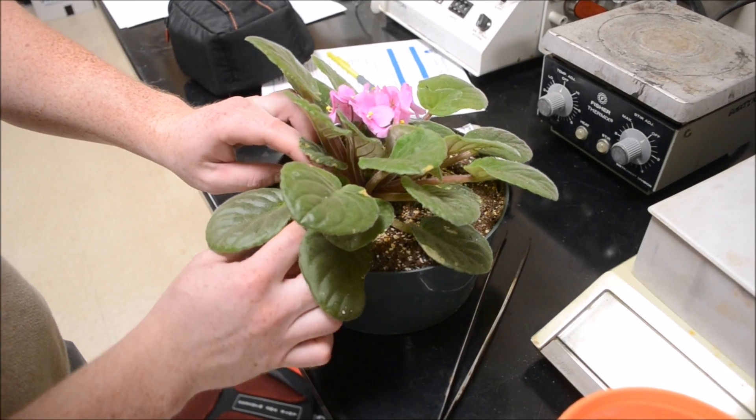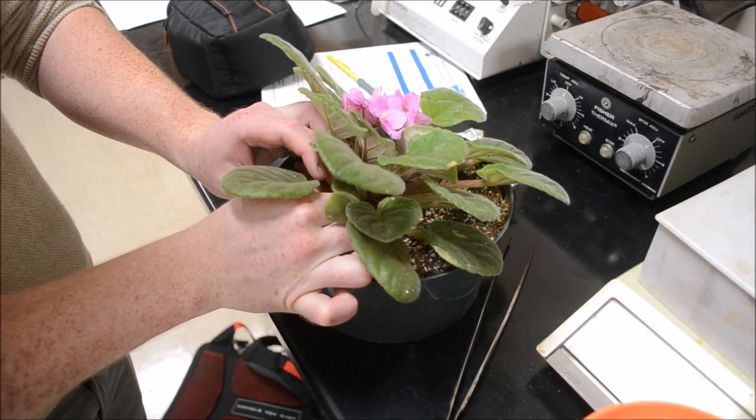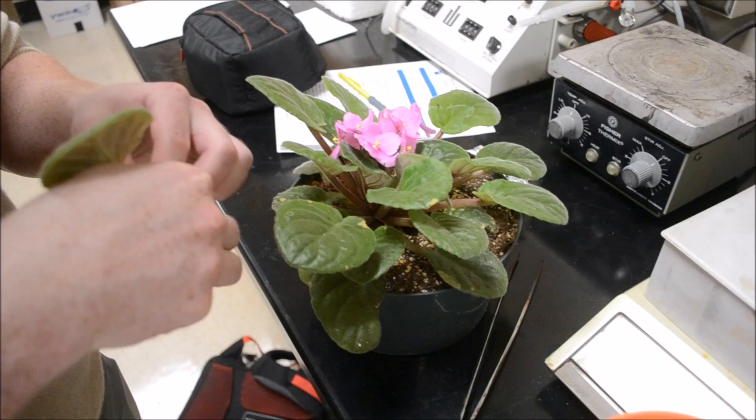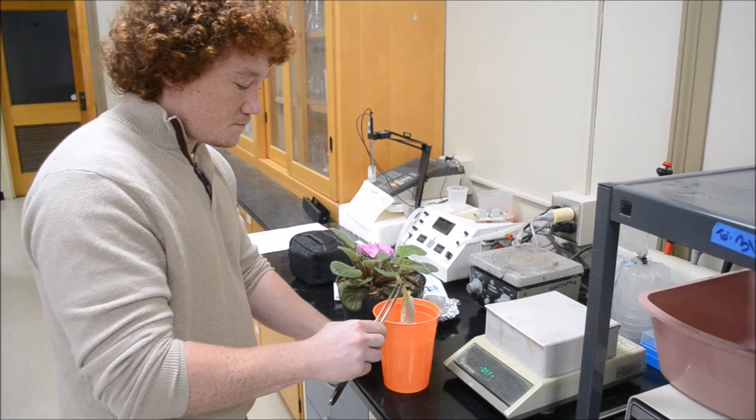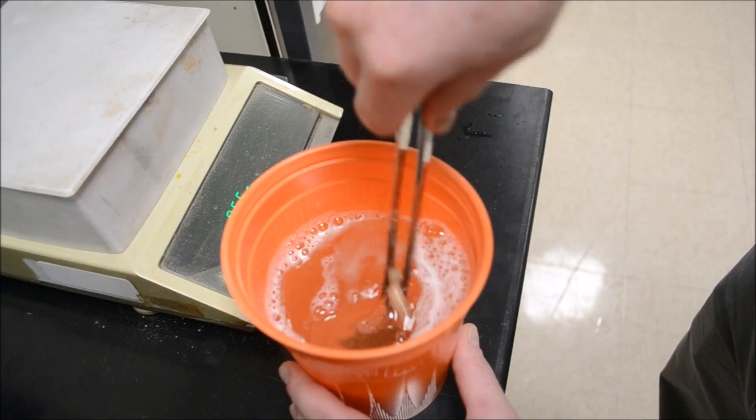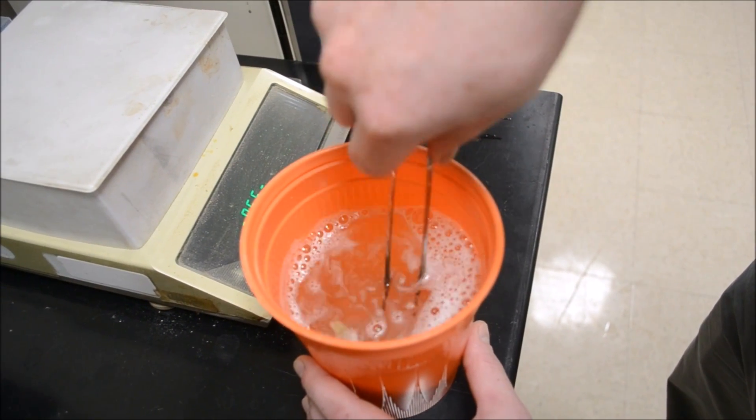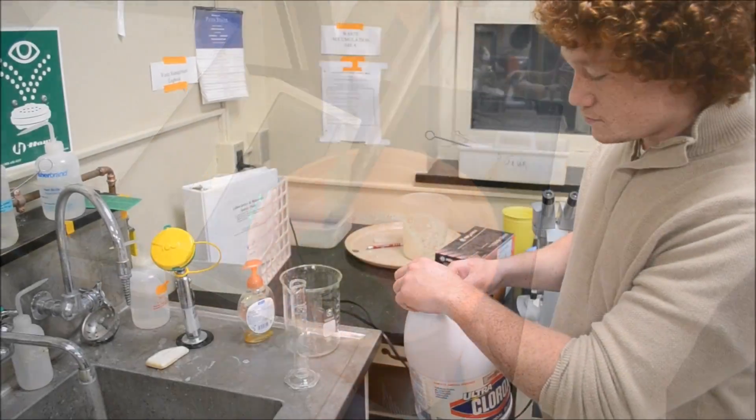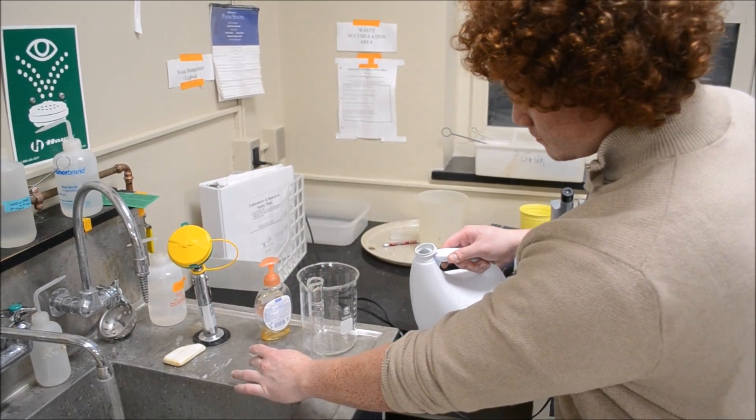After preparing a soapy wash, select a decent sized African violet leaf and petiole. Next, agitate the soapy solution with your leaf and petiole. Sterilization is of the utmost importance when it comes to tissue culture, so make sure to do a good job.